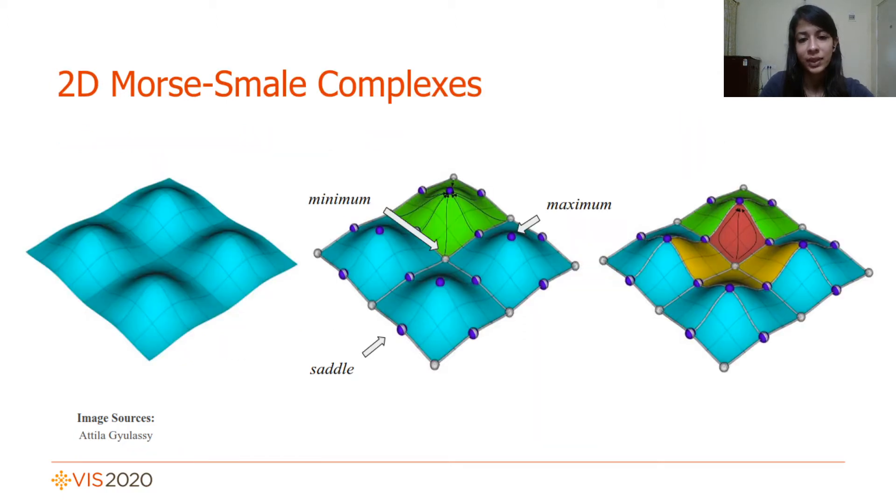To give you a quick flavor of what a 2D Morse-Smale Complex is, let us consider a sample scalar function which consists of a number of peaks and valleys. The critical points, namely the maxima, minima, and saddles, correspond to the points where the gradient of the function becomes zero. The Morse-Smale Complex is the partition of this underlying function domain into regions of uniform gradient flow behavior as described by the integral lines shown.